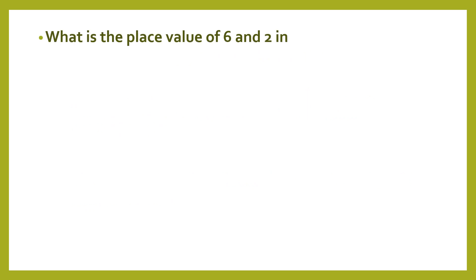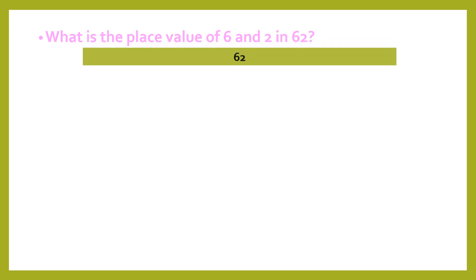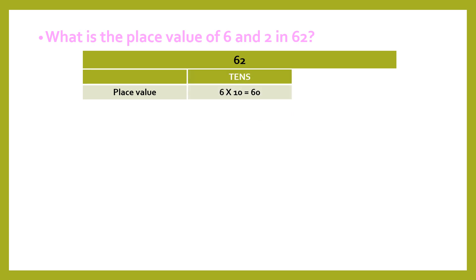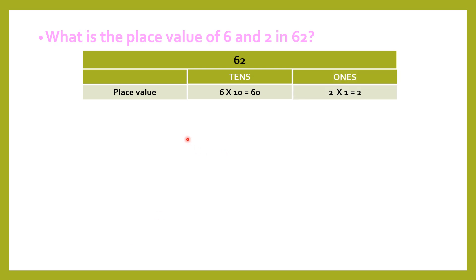What is the place value of 6 and 2 in 62? First we will identify the position of each digit. 6 is in the place of tens in 62, and 2 is in the place of ones. We are going to multiply each digit by its position value. For example, 6 is at the place of tens.